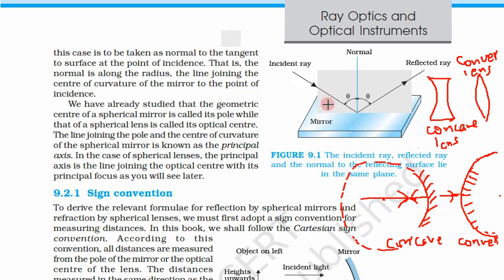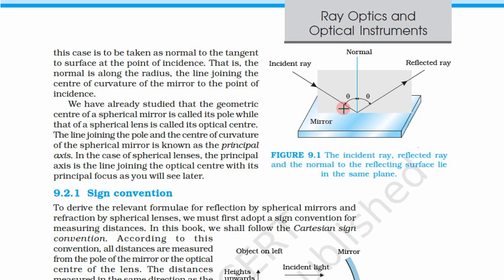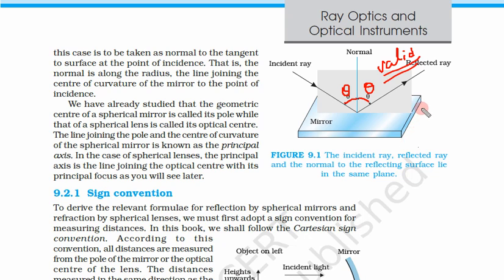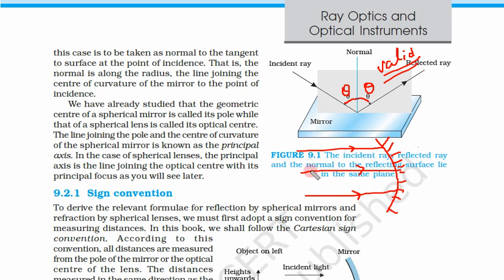Now, what about the law of reflection for spherical mirrors? The incident and reflected ray must make the same angle with the normal — this law is also valid for spherical mirrors. But the way to draw the normal will change. Taking the example of a concave mirror, if we have a parallel beam of rays — ray 1, 2, and 3 — how will these rays reflect?